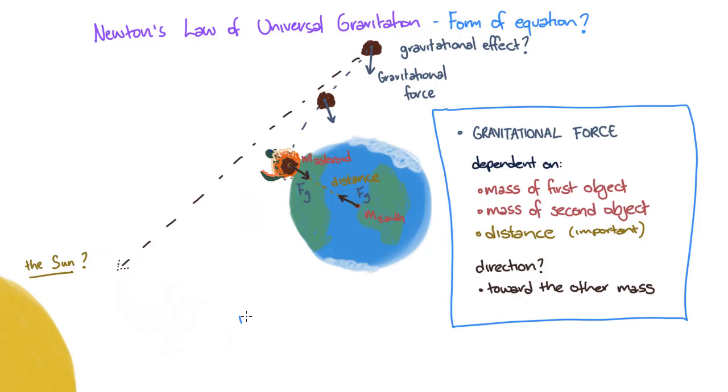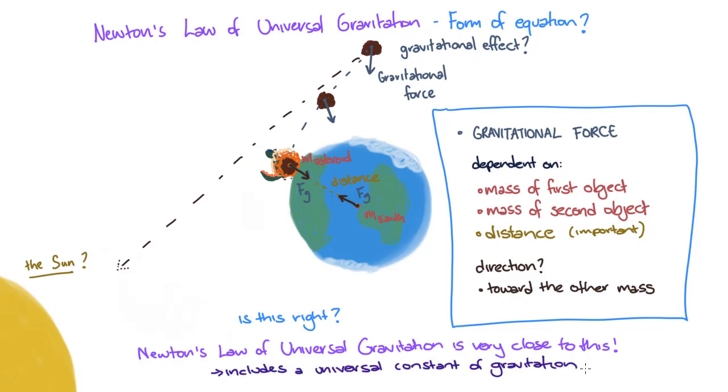So does the equation for Newton's law of universal gravitation actually match these predictions? As it turns out, it is pretty close. The gravitational force acting on two objects is equal to the mass of each of the objects multiplied together and divided by the square of the distance between the objects. But it is also multiplied by another constant, which is known as the universal constant of gravitation.